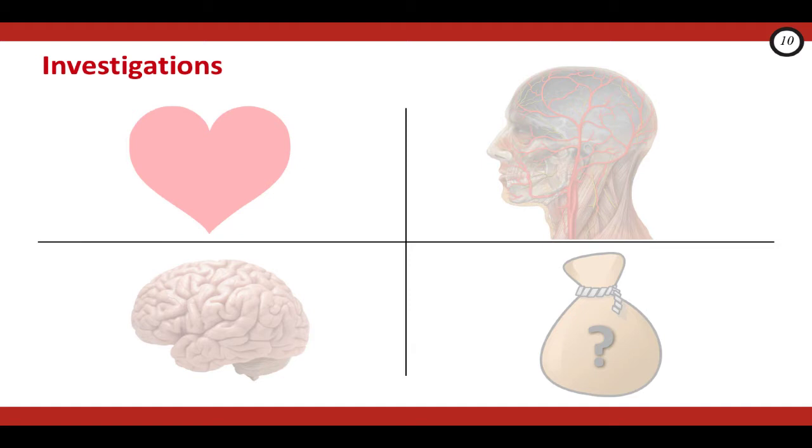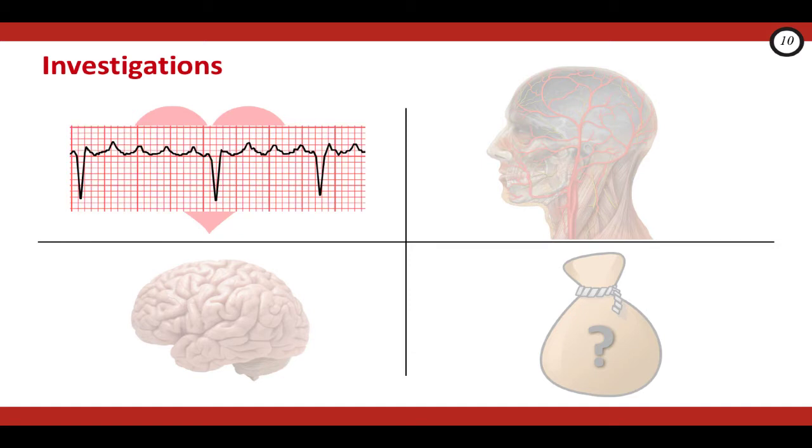To look for a cardioembolic source, do an EKG. You're primarily looking for AFib here, but other EKG abnormalities like bundle branch blocks or ST elevation from an LV aneurysm can give you a clue to major structural heart disease. In this case, you may want to arrange an echocardiogram more urgently, even though this is not normally a priority test for ER docs in the case of a TIA patient.